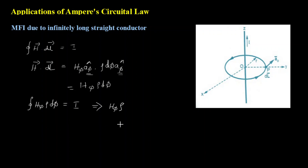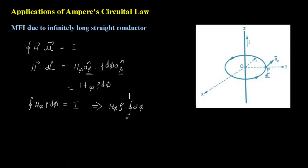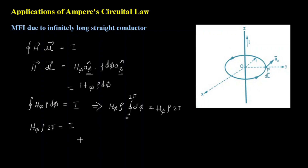So with H_phi and rho as constants, I am left with integrating only d-phi around the path, which means integrating from 0 to 2π. The integral of d-phi gives phi, and with the upper limit of 2π, I get H_phi rho times 2π. This tells me that H_phi rho 2π equals the current I.